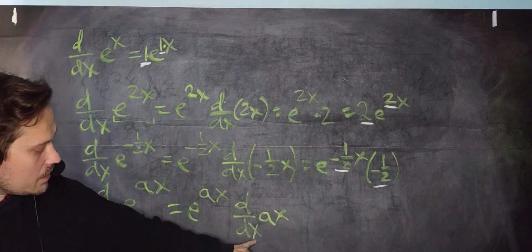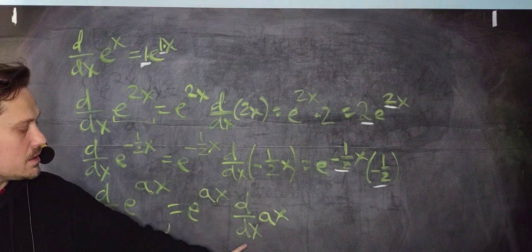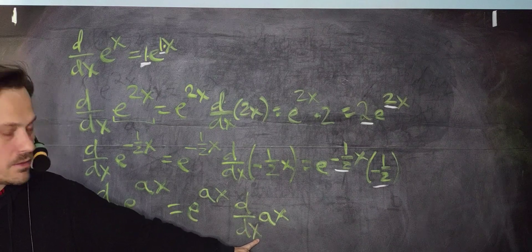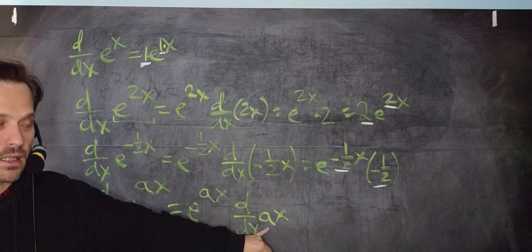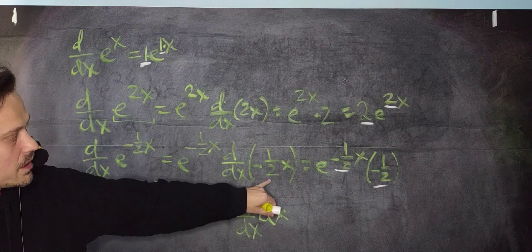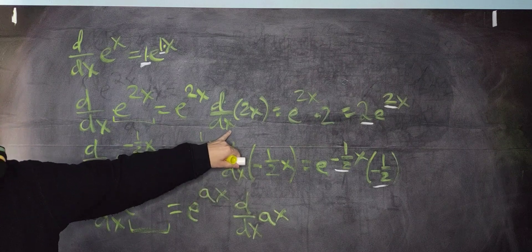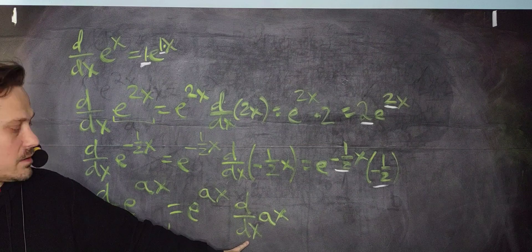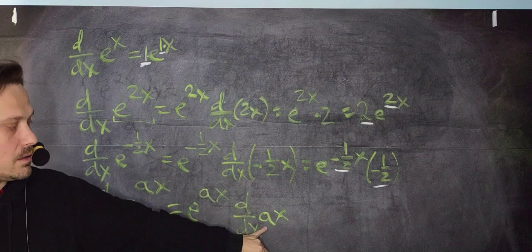Now look, here, in the bottom, it says dx. It doesn't say da. So because you're differentiating with respect to x, the a is treated like a constant. You see, like here, I differentiated with respect to x, and I just ended up with the negative 1 half. I differentiated with respect to x, I ended up with a positive 2. I'm differentiating with respect to x, I'm just going to end up with the a. That's all.